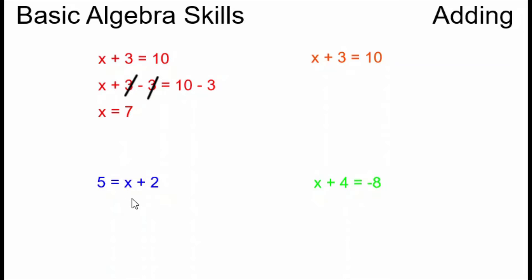In the second example it's very similar but we have our x on the right side of the equals. The procedure is the same. I want my x alone. It has a 2 being added to it so I subtract the 2 but I have to subtract the 2 from both sides.